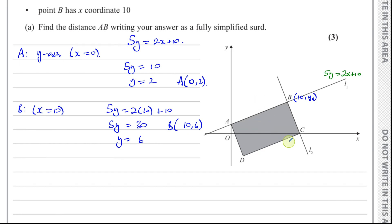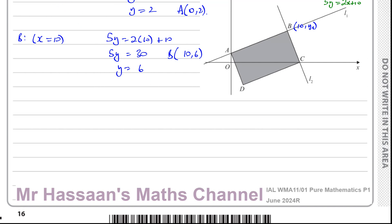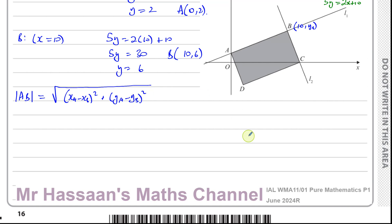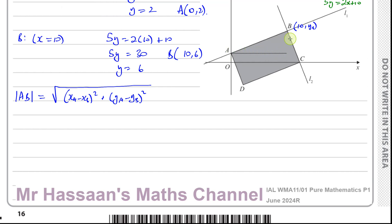To find the distance AB, we use the length formula: the magnitude is given by the square root of (xA minus xB) squared plus (yA minus yB) squared. This is essentially Pythagoras' theorem — we're making a right-angle triangle between A and B by joining the points horizontally and vertically.